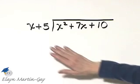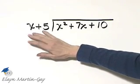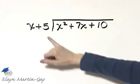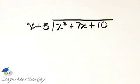For this example, we are dividing by a binomial, so I'm setting it up in long division. It's x plus 5 into x squared plus 7x plus 10.